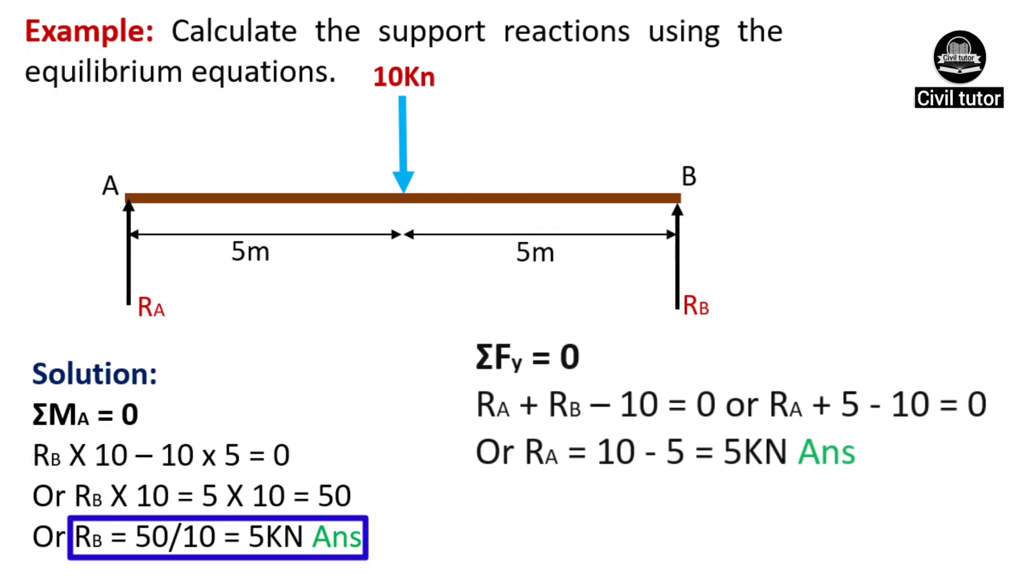Now, using another equation, which is summation Fy equal to zero, to calculate RA, we have RA plus RB minus 10 equal to zero. By substituting the value of RB, we get the value of RA equal to 5 kN.